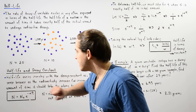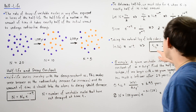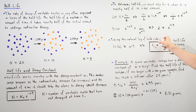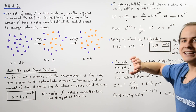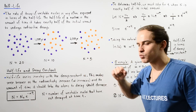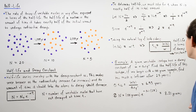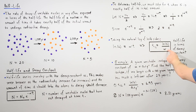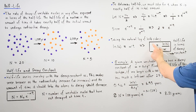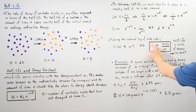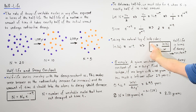This confirms the inverse relationship between half-life and the decay constant: as alpha increases, the half-life decreases.